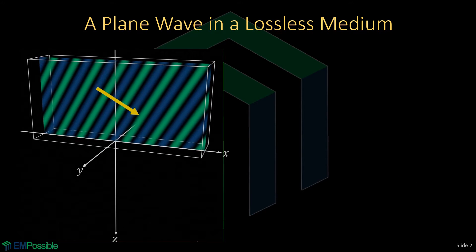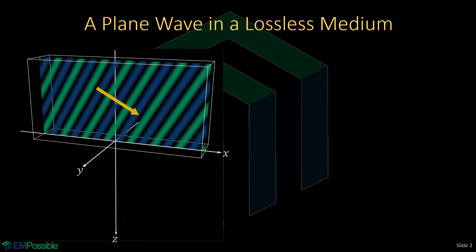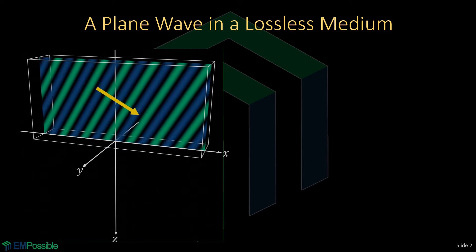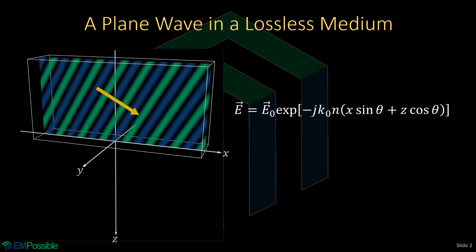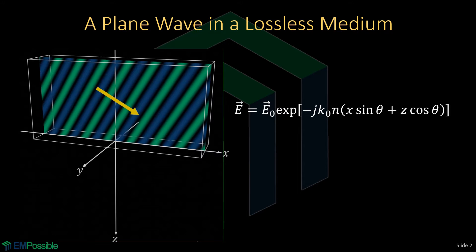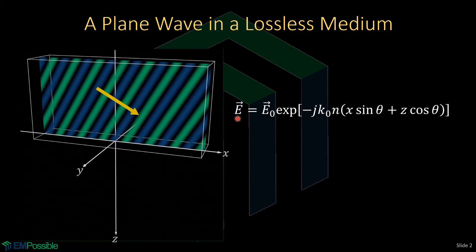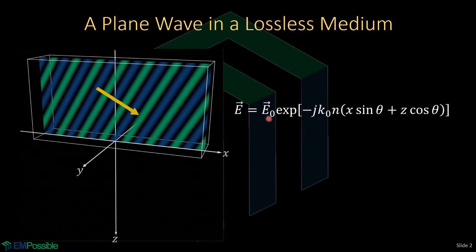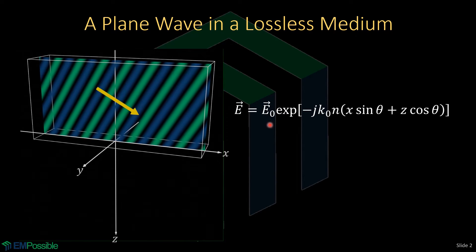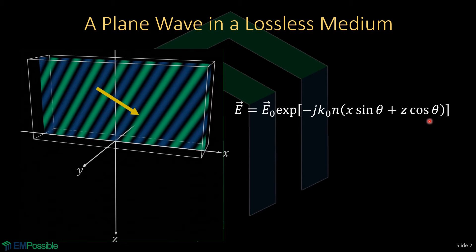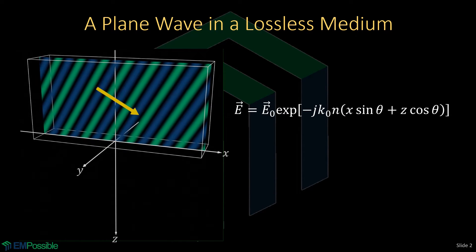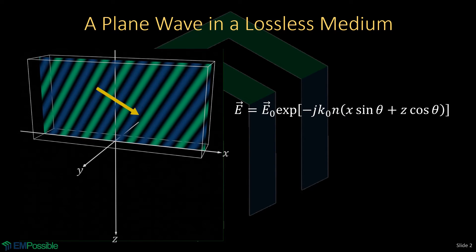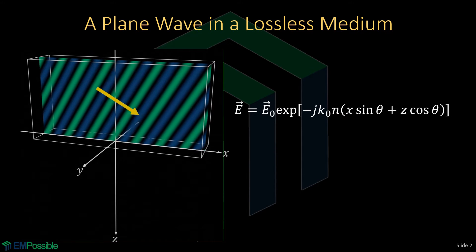Suppose we have a plane wave in some medium — just an ordinary lossless medium right now. We can see the wave just sort of trucking along. We can write an expression for that wave. The overall electric field we write as E; it has some amplitude and polarization, but this won't be very important for our discussion. The magic is really in the exponential term. We are restricting our wave to be in the xz plane, and that's not going to change anything about the meaning of what a complex angle is.